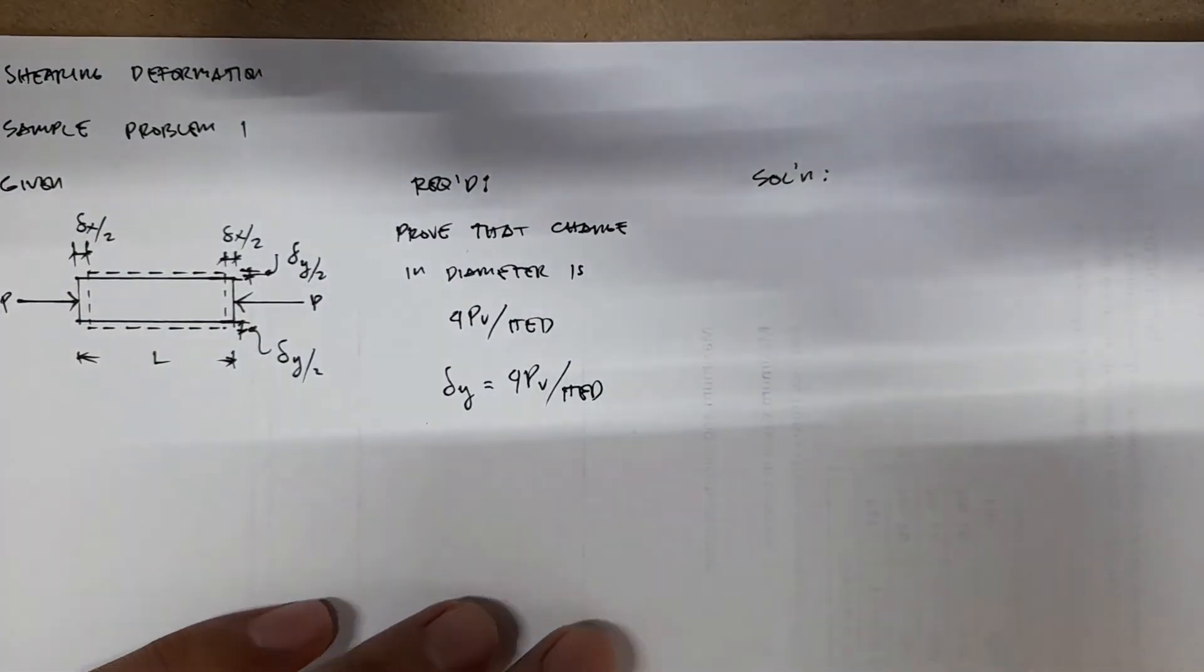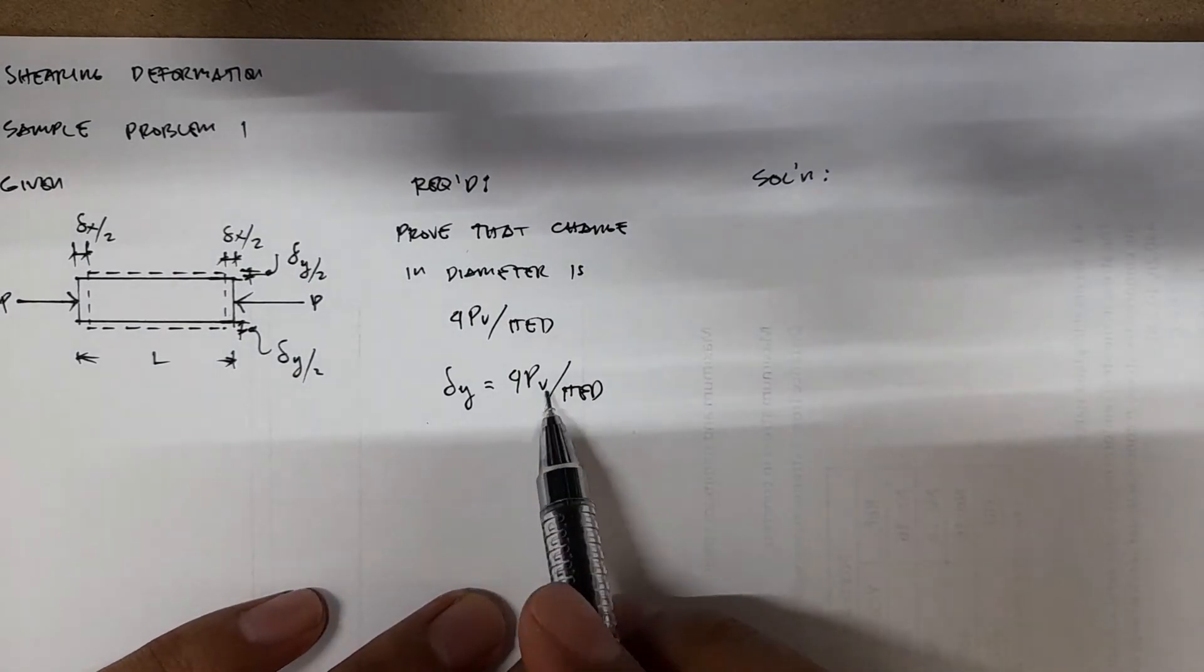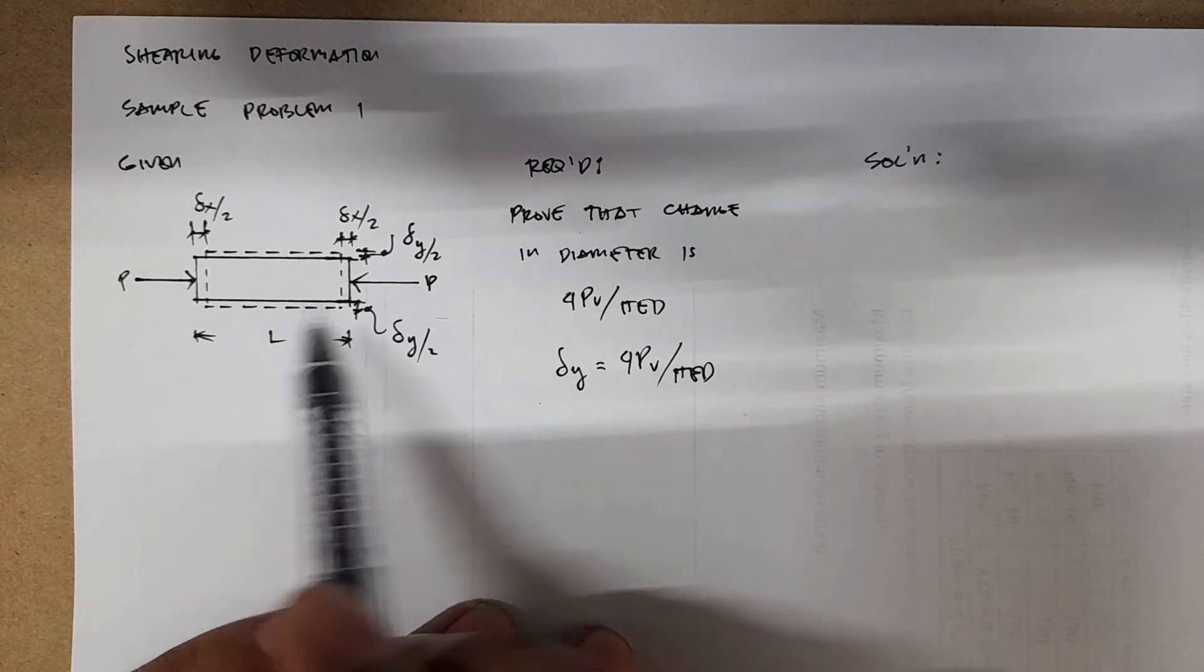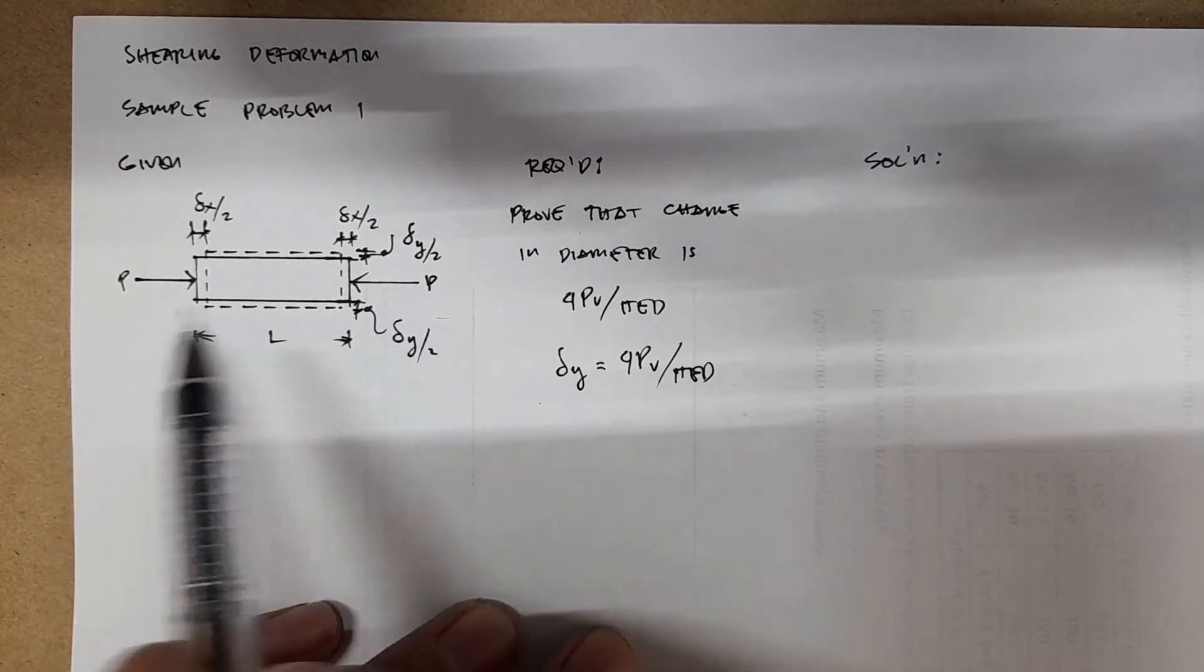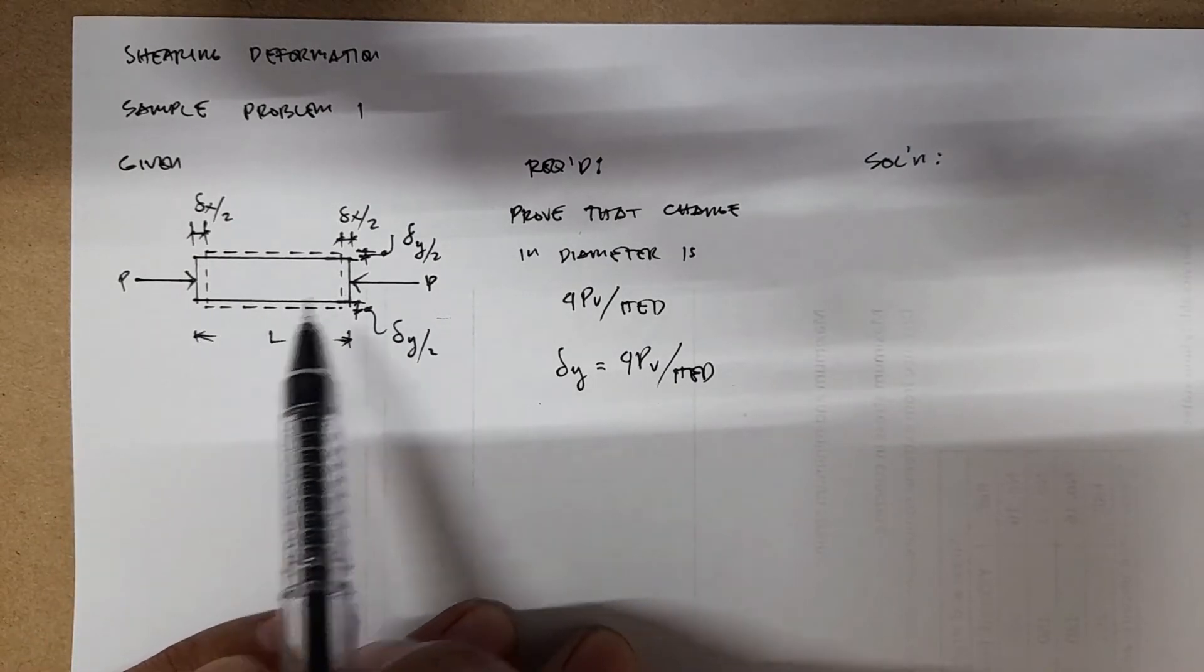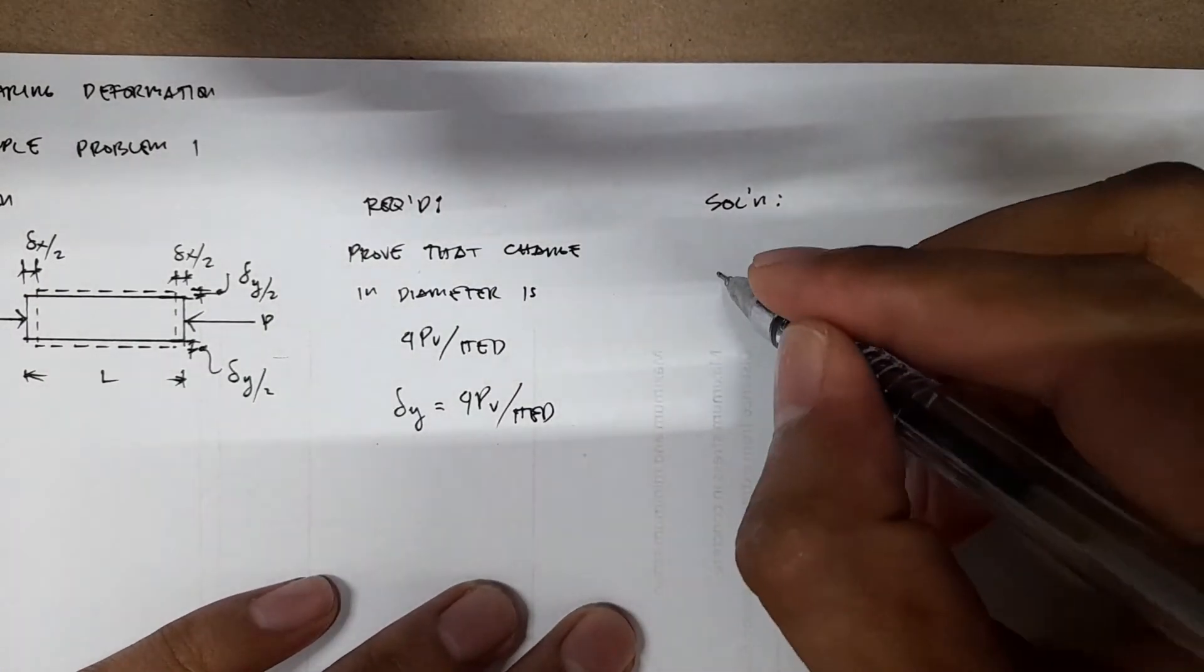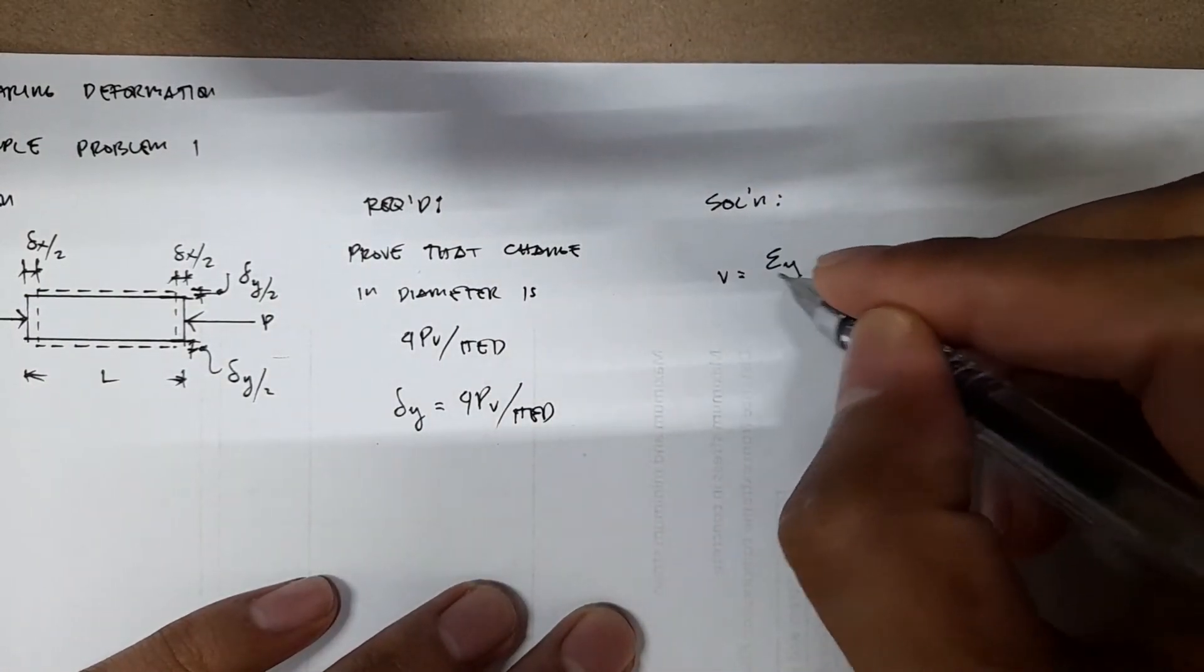Solution. We will use here the Poisson's ratio, which is present here, V. So Poisson's ratio, noting that the longitudinal direction where the P is acting is in the x-direction, so the denominator will be the strain x. So V equals negative...